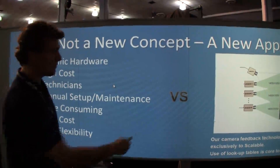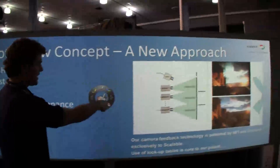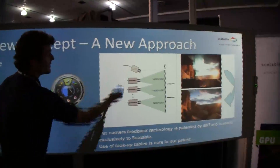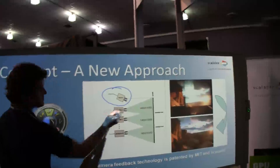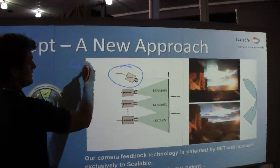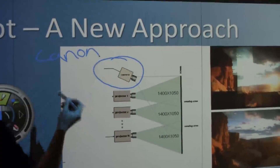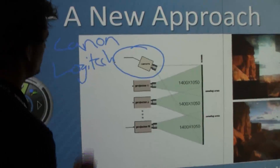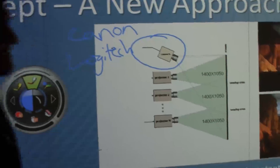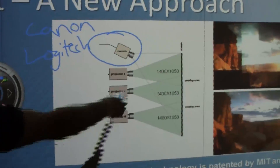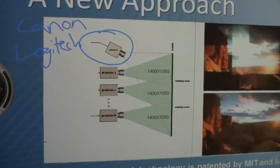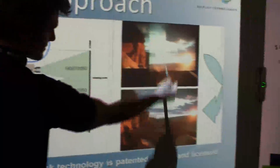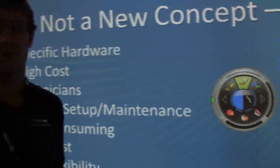So let's say I want to show you a little bit more about what my technology does. You can see over here we've got a camera which is either going to be a Canon or a Logitech. What it allows you to do is take multiple projectors that have a little bit of overlap region and create one single seamless image. And then by doing it on the GPU, you're basically application independent — so anything you can do in Windows, you can do it here.